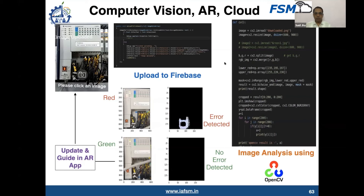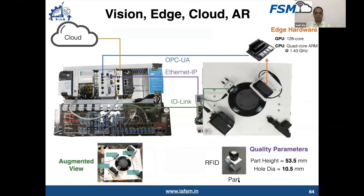That is a closed-loop kind of integration. We used computer vision, augmented reality to guide the person, the processing power of the cloud, and the open-source OpenCV library for computer vision. These are fair and good use cases demonstrating possible vision applications in his factory. This is another experiment we have done, which you can also do with the kits when permitted. We have two kits: a mechanism kit and a controller kit, which can be interfaced to implement these applications.